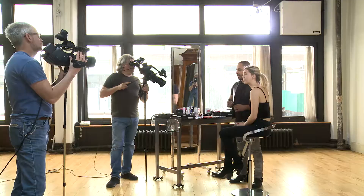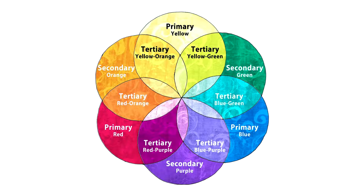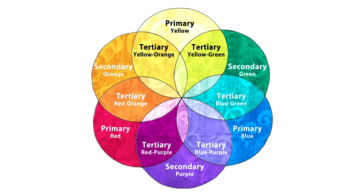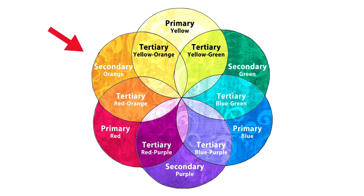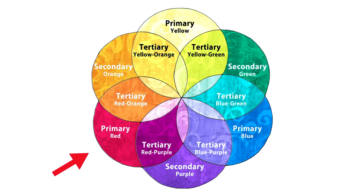We're going to use the color wheel as an example. The color wheel consists of six colors: red, orange, yellow, green, blue, and violet. Red is complementary to — meaning the opposite of — the color directly across from it. So red is complementary to green, orange is complementary to blue, and yellow is complementary to violet. In this case, for neutralization under the eyes, green is going to counteract any kind of redness that you see.